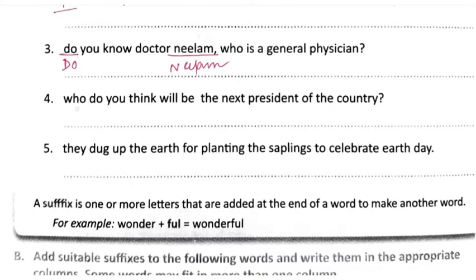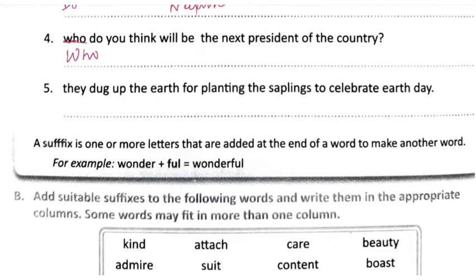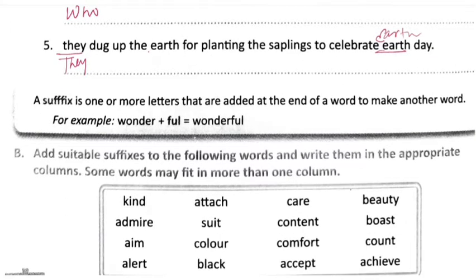'Who do you think will be the next president of our country?' — W should be capital. 'They dug up the earth for planting the saplings to celebrate Earth Day.' — T capital for 'They', and Earth Day should be capitalized.